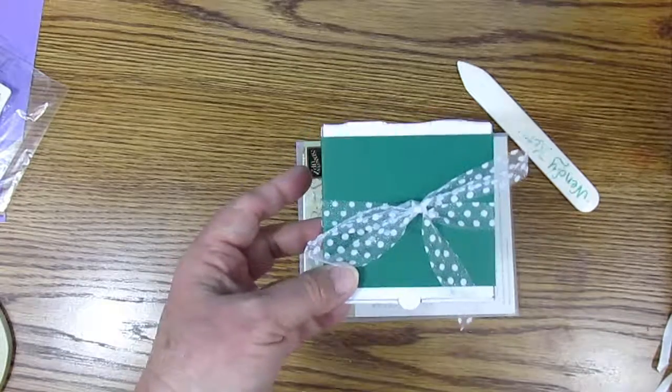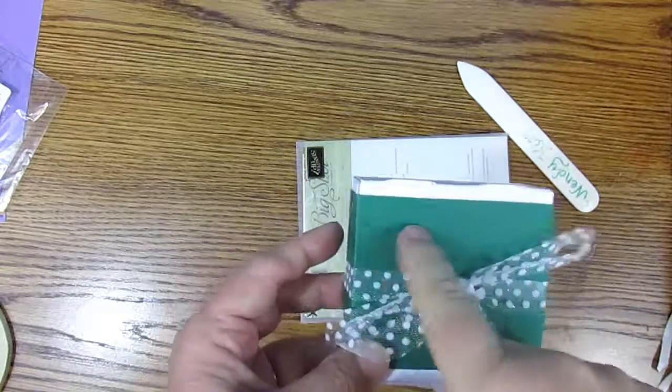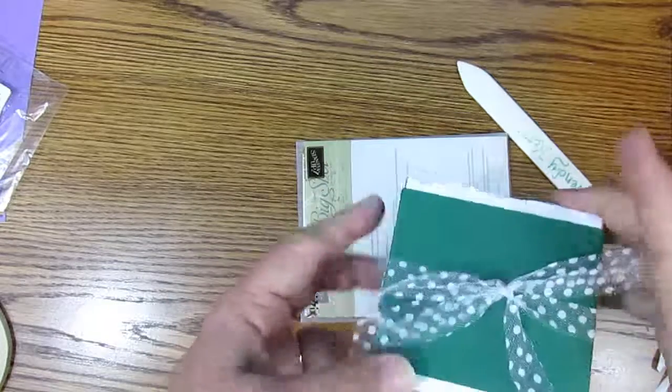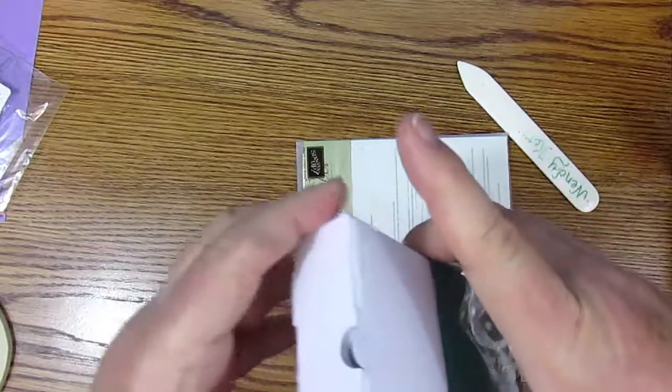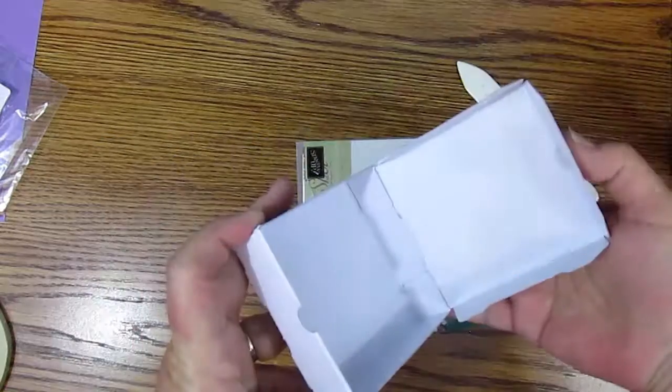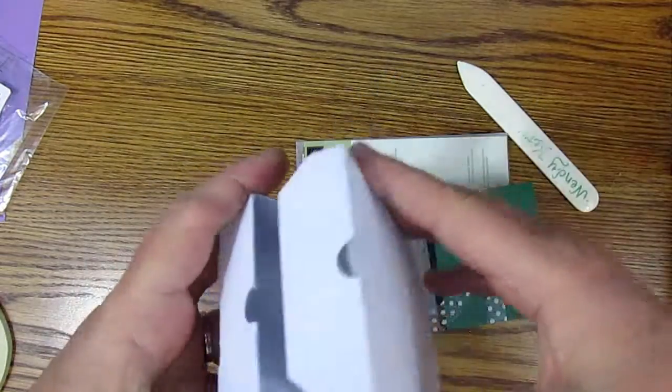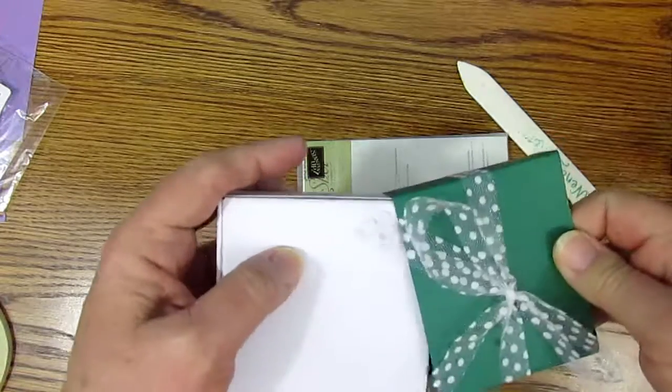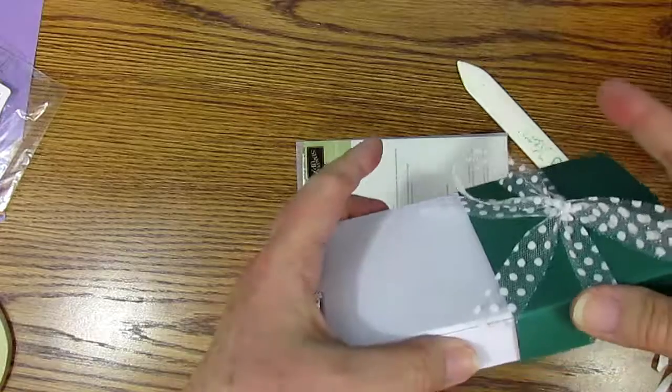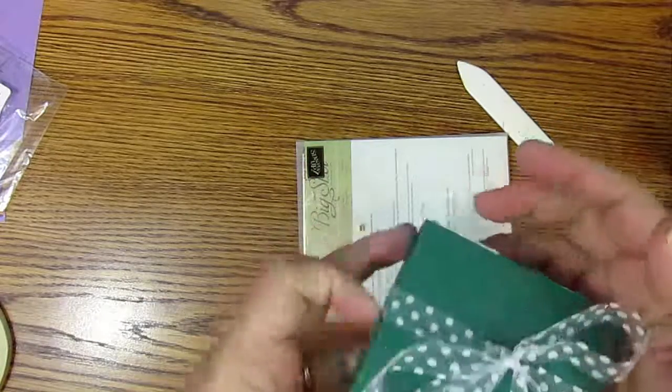So there is a simple belly band. You can add a tag or some stamping if you would like. And the receiver can slip off the belly band and get to the inside treat or gift. And putting it back on is fairly easy too.